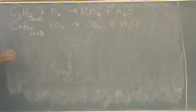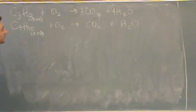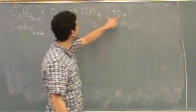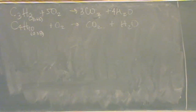3, because there's 3 carbons, 8 hydrogens, there's 4 here. That makes on the right-hand side. 3 times 2 is 6, plus 4 is 10, so 5. Okay, top one's balanced.